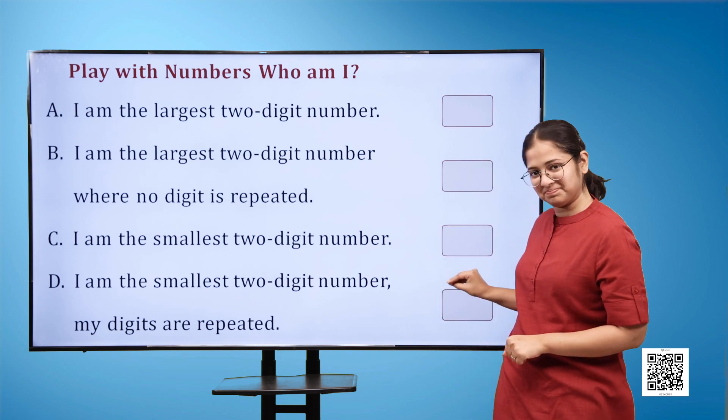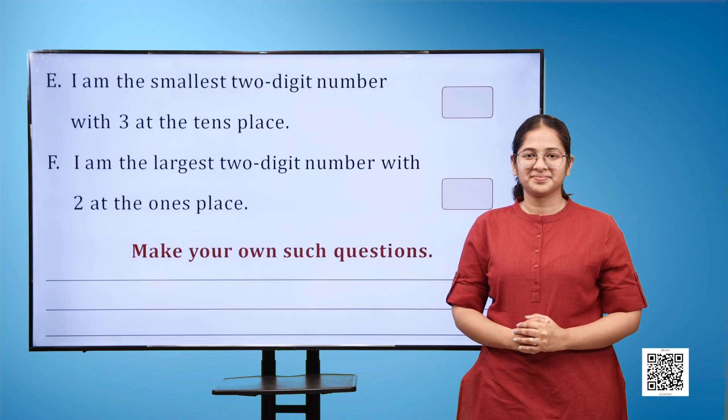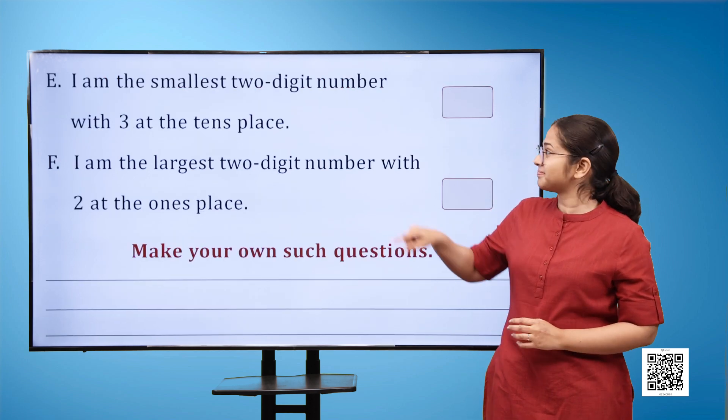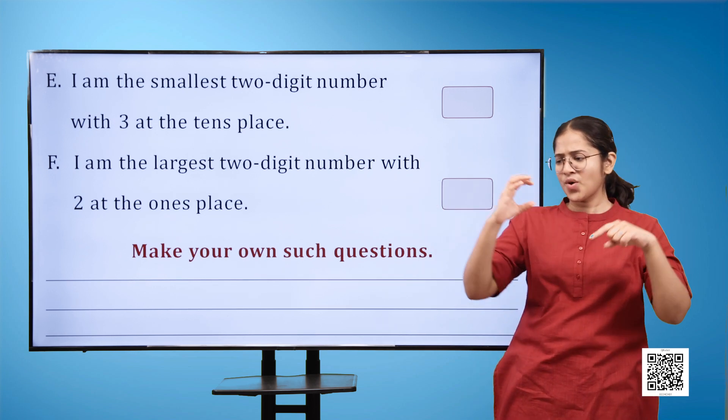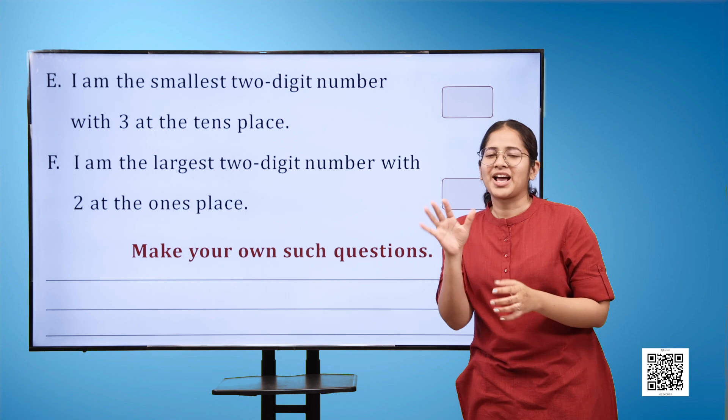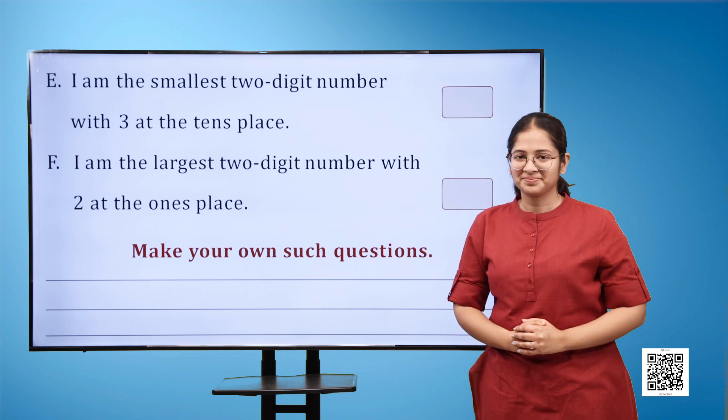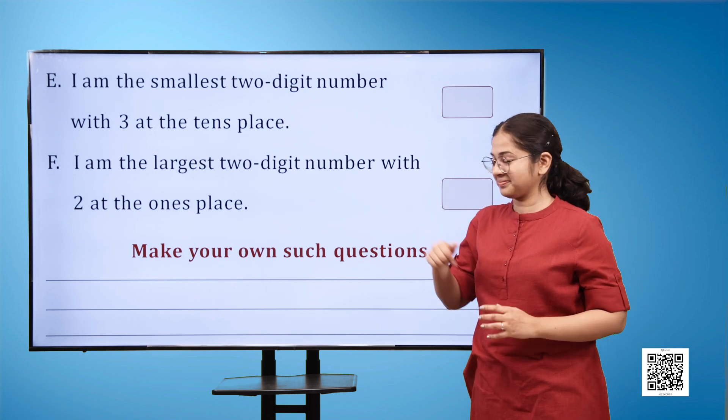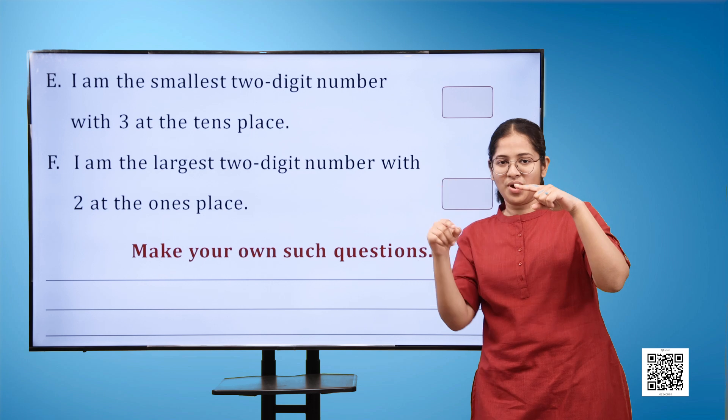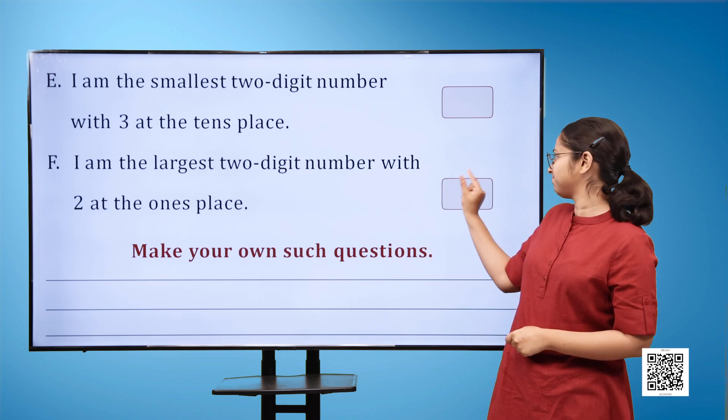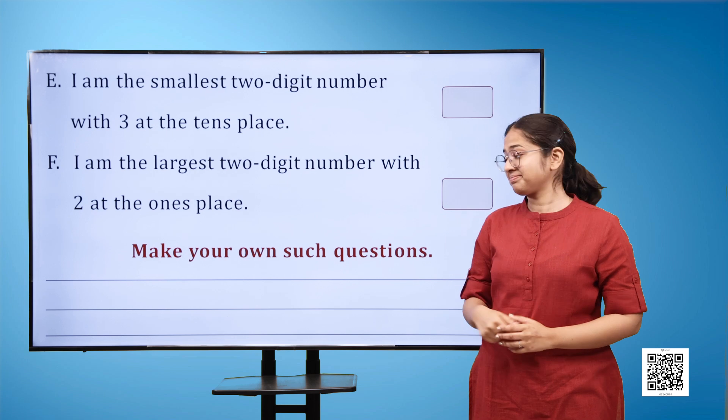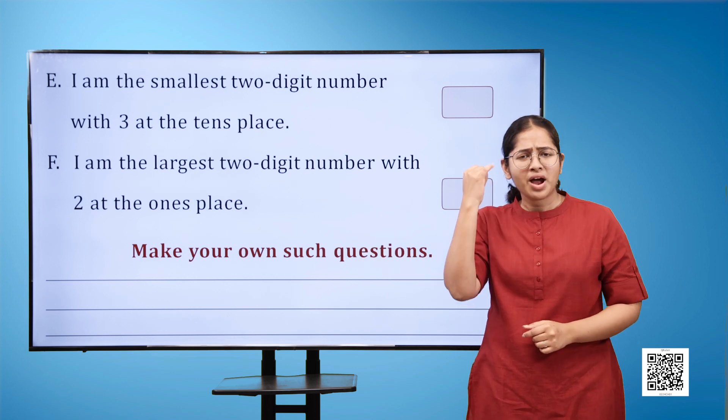E) I am the smallest two-digit number with three at the tens place blank. F) I am the largest two-digit number with two at the ones place blank. Now make your own such questions.